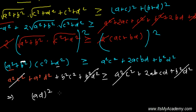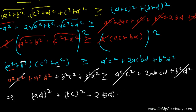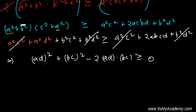After cancellation, we're left with a²d² + b²c² ≥ 2abcd, or equivalently a²d² − 2abcd + b²c² ≥ 0, which is exactly (ad − bc)² ≥ 0.